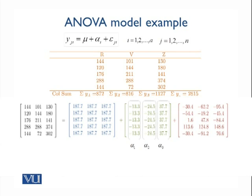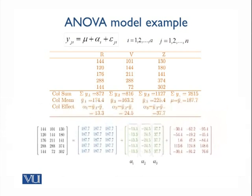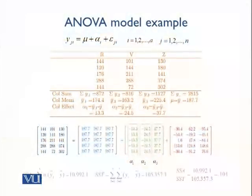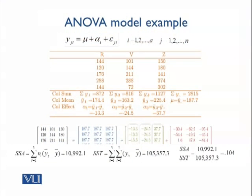We can represent this in matrix form, doing cell-wise addition: y_{j(i)} equals the grand mean matrix, plus the treatment effects matrix (R: +13.3, V: −24.5, Z: +37.7), plus an error matrix. Because we have replicates, we can estimate the error as well, and SSE can be calculated from this matrix. SSA divided by SST is 0.104, telling us that the random error element is large — SSA is only explaining 10.4% of the variation.